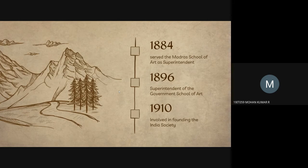In 1884, Havell initially served the Madras School of Art as superintendent for five years. He served in the 1890s and then joined as superintendent of the Government School of Art in Calcutta.